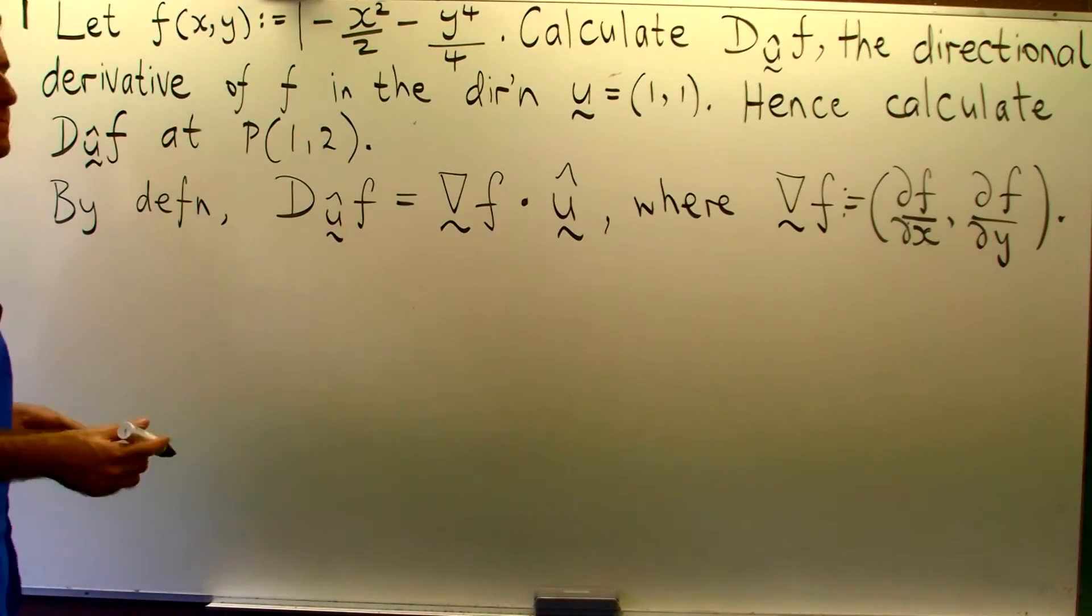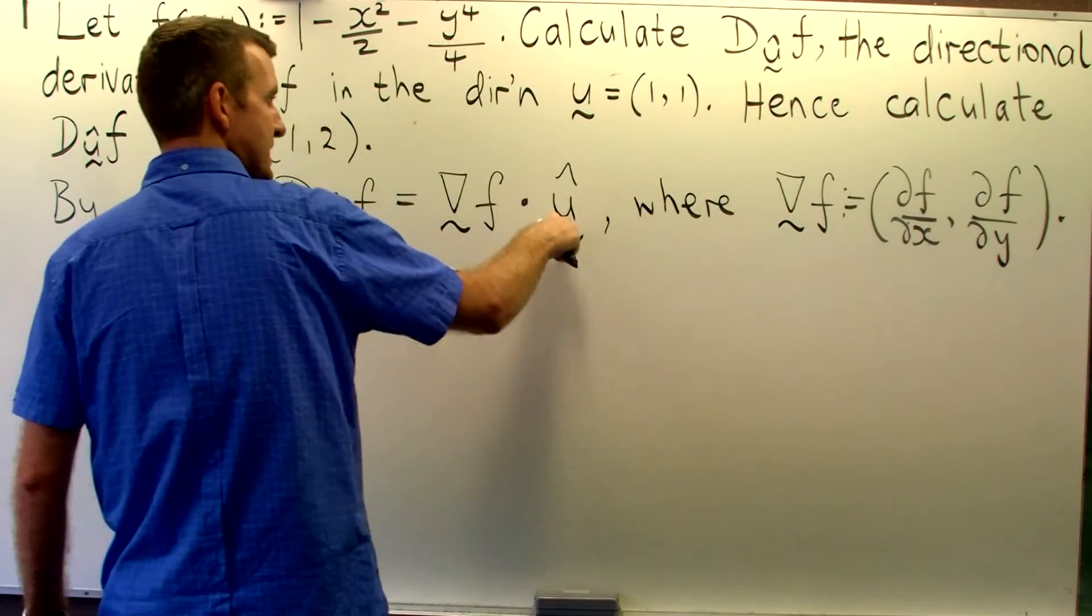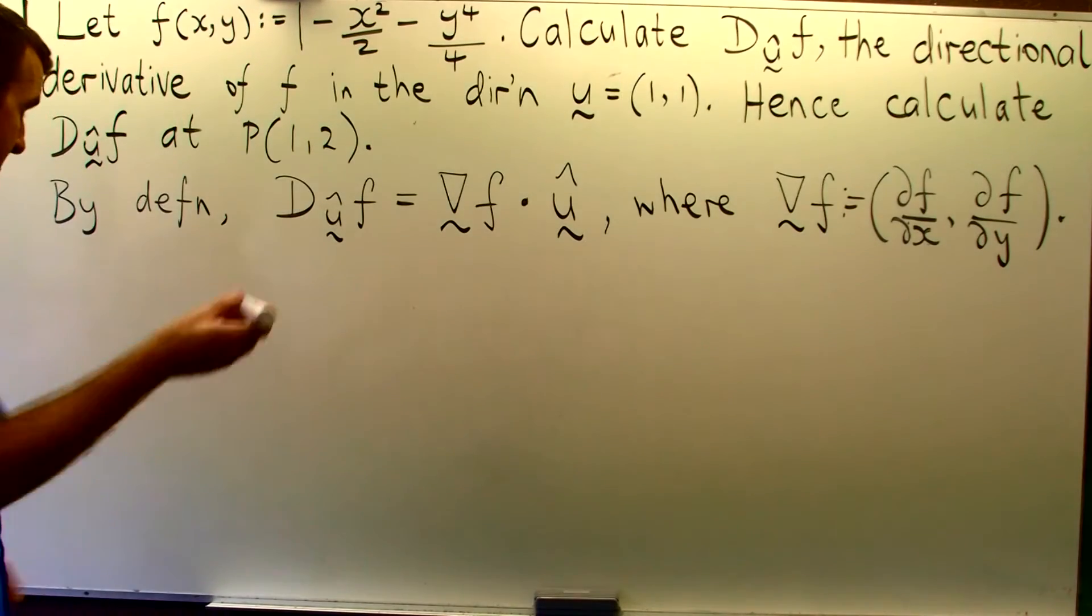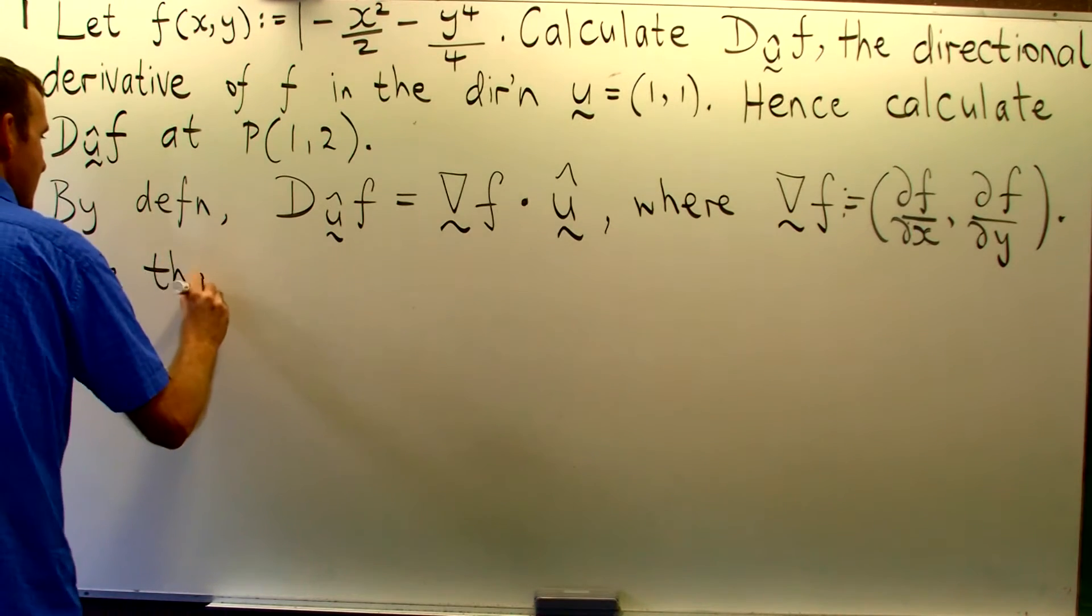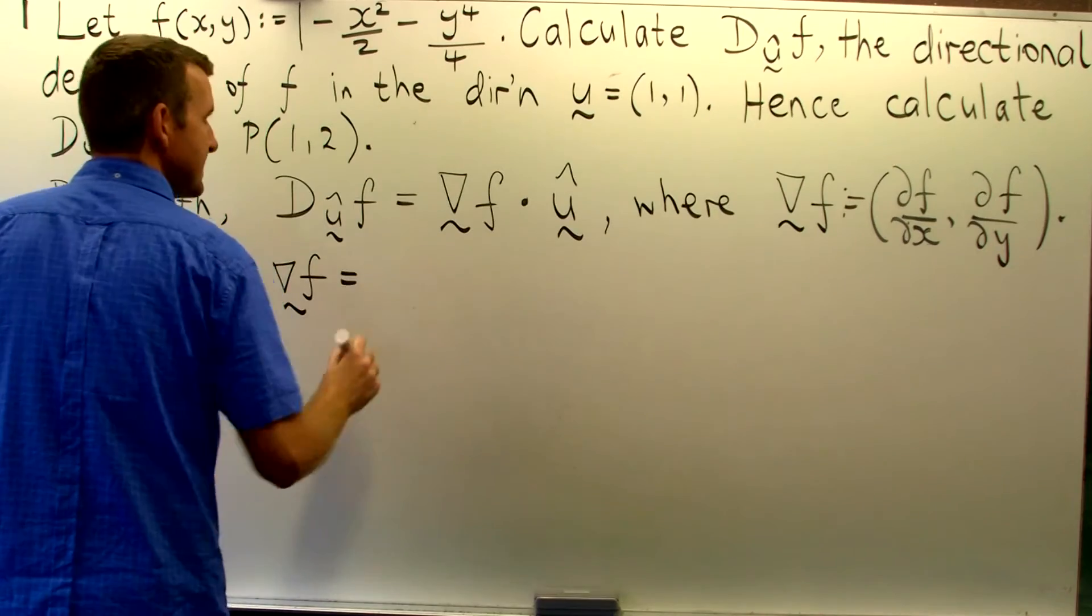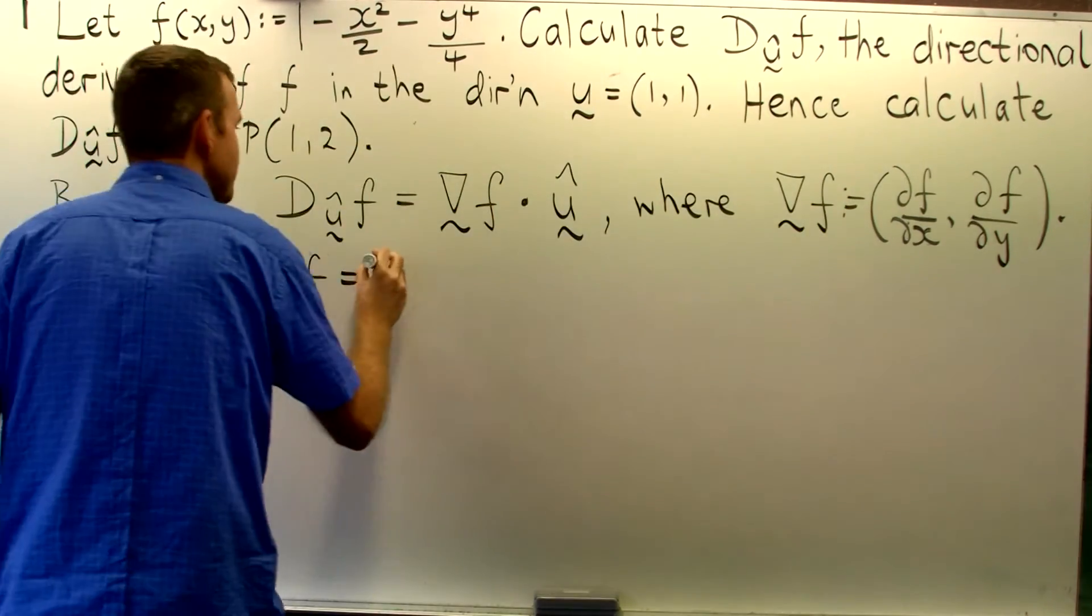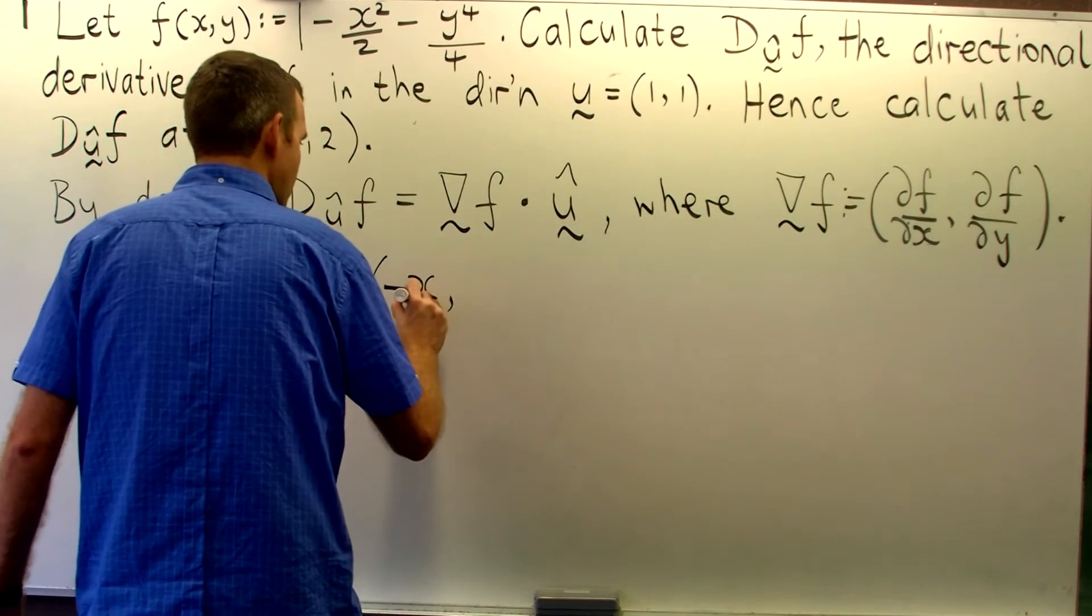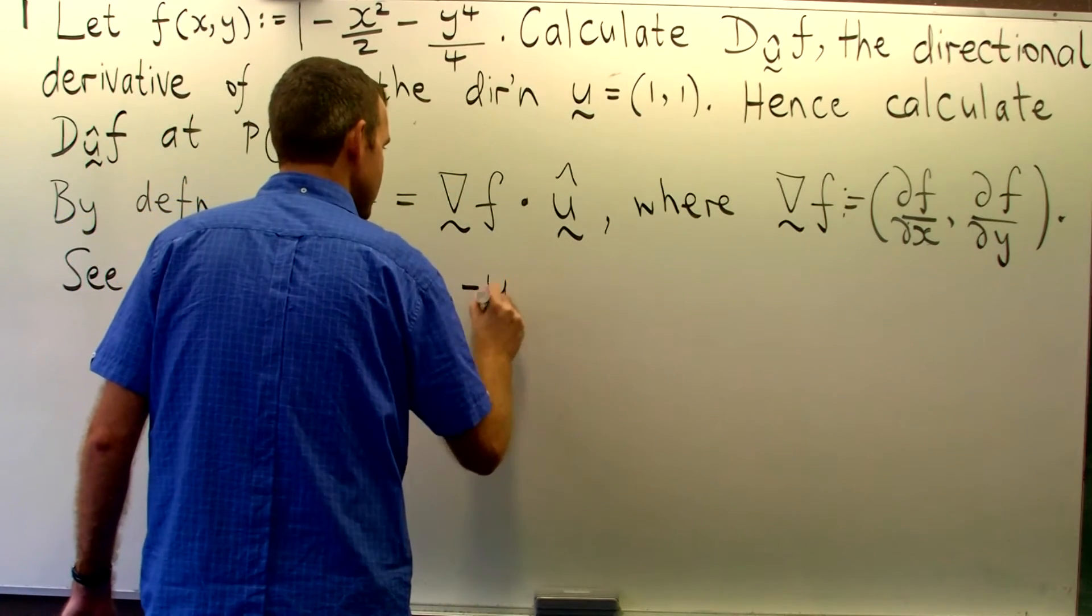Okay. So let's work out what this is, then find the unit vector from the given vector and we'll do our calculations. Alright, so firstly grad f. It's just df dx comma df dy. So df dx here is going to be minus x. Df dy is going to be minus y cubed.